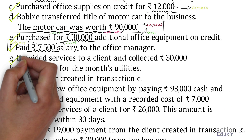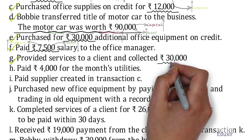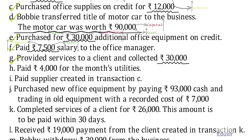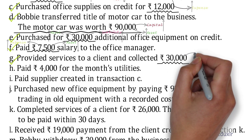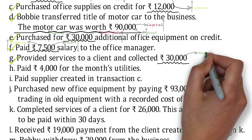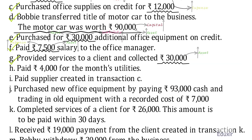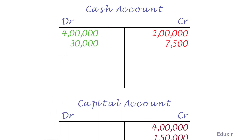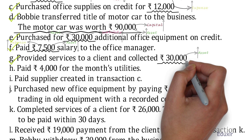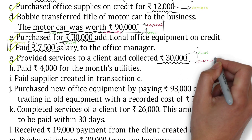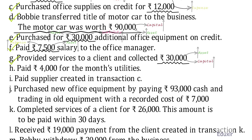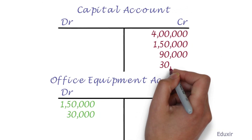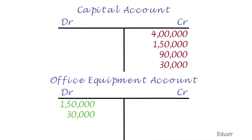Let us now deal with transaction G. In this transaction, there is 30,000 rupees inflowing into the business, so this increases the cash asset. The rule to record an increase in the asset is to debit the corresponding asset account, so we debit the cash account with 30,000 rupees. At the same time, this also increases the capital account, so we credit the capital account with 30,000 rupees. That covers transaction G.